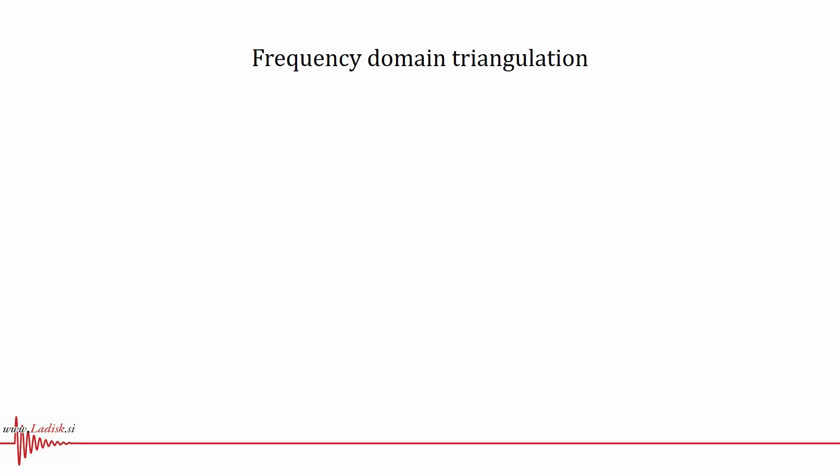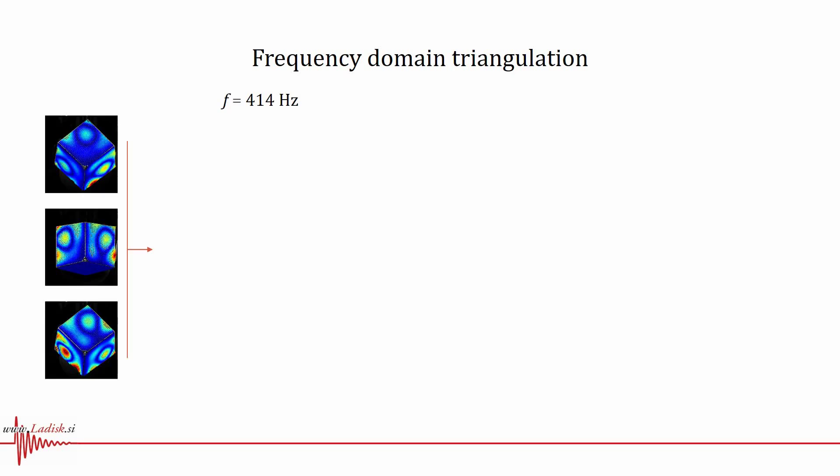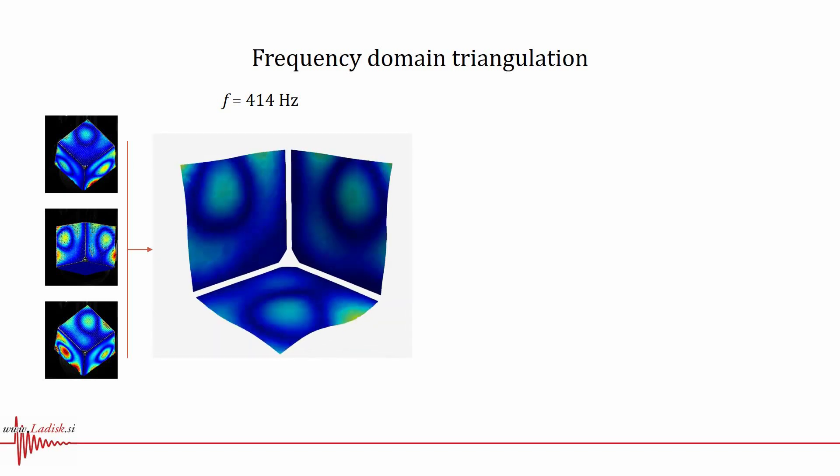Using the described method, the measured displacements of approximately 2,700 points in each image were identified using digital image correlation. Transforming the measured image displacements into frequency domain using the fast Fourier transform, frequency domain images of the vibration were composed. Using multi-view triangulation on the six acquired views at selected frequencies, three-dimensional operating deflection shapes of the structure were reconstructed.